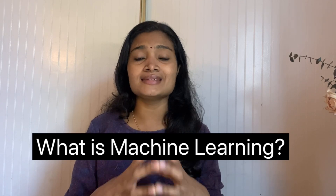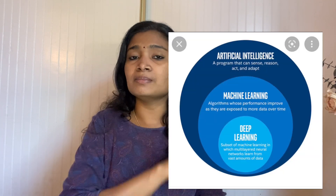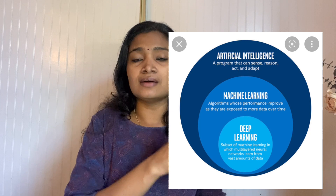The next question is: what is machine learning and how is it related to artificial intelligence? We generally hear these two terms together. Artificial intelligence is the technology of making machines intelligent — giving them the ability to think or react like humans. Machine learning is actually a subset of artificial intelligence where we build algorithms, feed data, and give input to machines to make them intelligent.